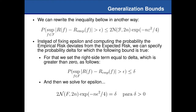Now we start with the generalization bound, which is basically derived from the empirical risk minimization principle, formulated in this particular inequality. We have a probability that the greatest possible divergence, considering the whole set of admissible functions — aka algorithm bias — getting every possible function from that particular bias, we measure the expected risk and empirical risk and compute the divergence. For both, the worst case scenario, assuming the worst case is greater than a given epsilon, which is a divergence factor.